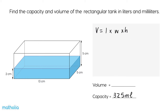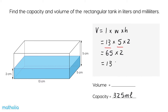We can see the liquid in the rectangular container is filled to a height of 2 centimetres. So the volume is equal to 13 centimetres by 5 centimetres by 2 centimetres. 13 times 5 times 2 equals 65 times 2 equals 130. The volume of the liquid in the container is 130 cubic centimetres, which is 130 millilitres.